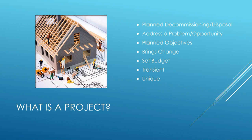Projects also have a set budget. Rather than coming from capital expenditure and just spending until it's gone, we work out how much our project is going to cost, agree that budget, and then deliver the project using it. A project is also transient — it has a defined start and end point. We know at what point the project is done and completed.